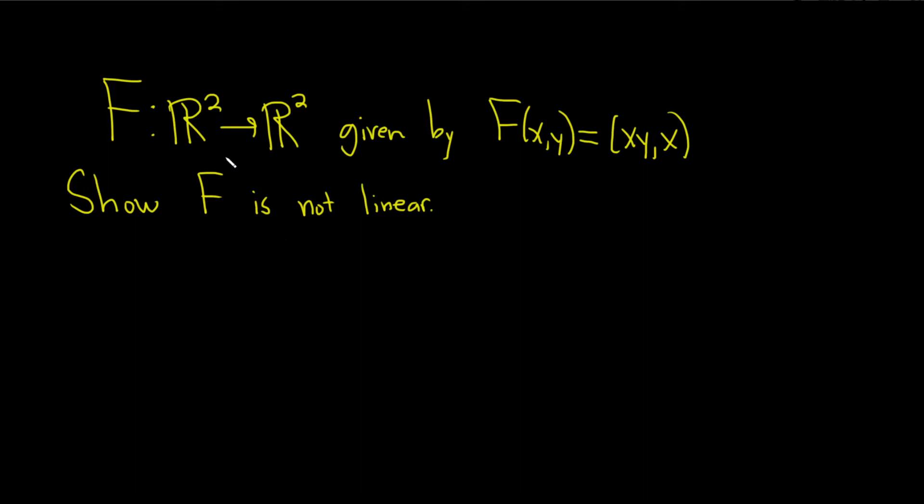In this problem we have a function from R² into R² given by F(x,y) equals (xy, x). And we have to show our function is not linear.